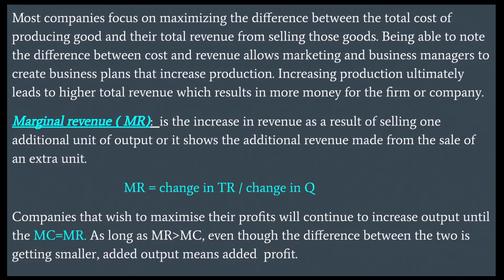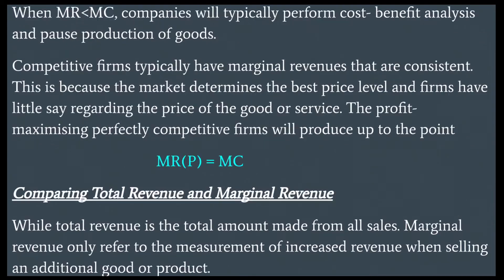As long as MR is greater than MC, even though the difference between the two is getting smaller, added output means added profit. When MR is less than MC, companies will typically perform a cost-benefit analysis and pause production of goods.